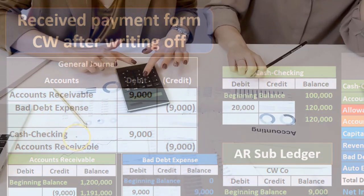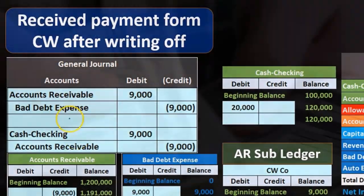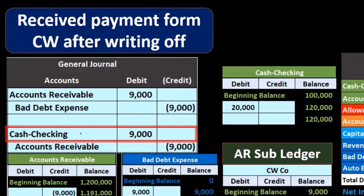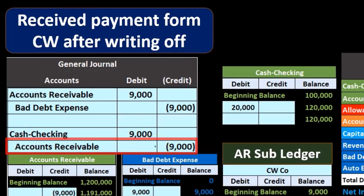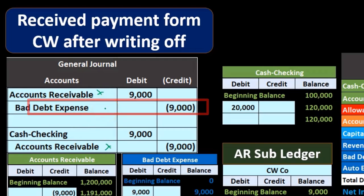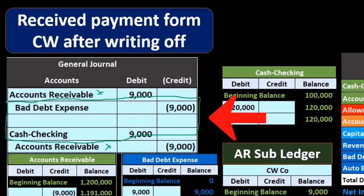Once we do that, we can perform the normal transaction for a company paying us on account: debiting the checking account and crediting accounts receivable. Notice that accounts receivable appears as both a debit and a credit across these two journal entries, so they cancel out. We're left with just a debit to checking and a credit to bad debt. We could shorten this to one journal entry from a technical standpoint, but that doesn't give us a good paper trail — therefore, we don't do that.